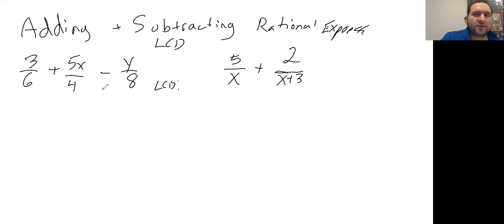The best process you have for that is take the biggest number, 8, and start listing out the multiples of that: 8, 16. Check, does 6 go into 16? No, so you have to move on. 24. Check, does 6 go into 24?